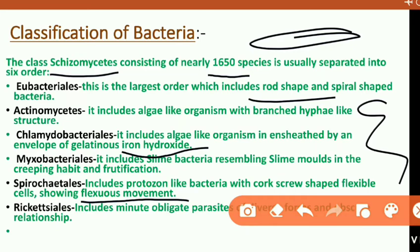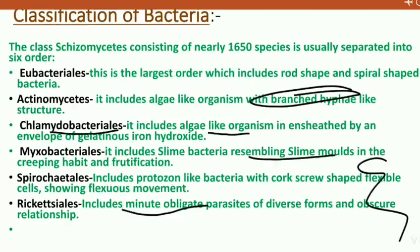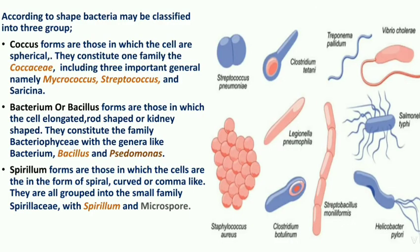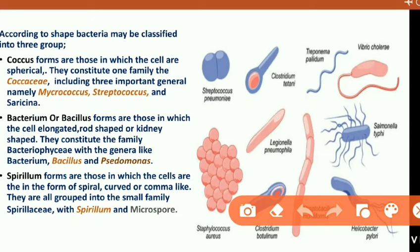Another order is Rickettsiales, which is a type of bacteria. Within the classification based on shape, the coccus form refers to rounded bacteria. Examples include Myxococcus, Streptococcus, and Sarcina.